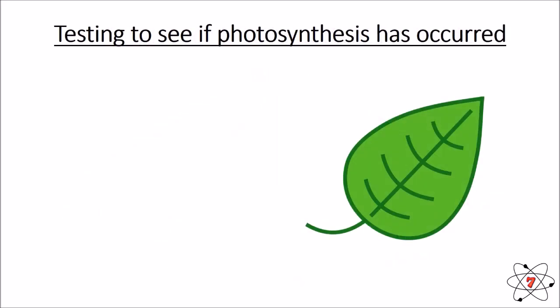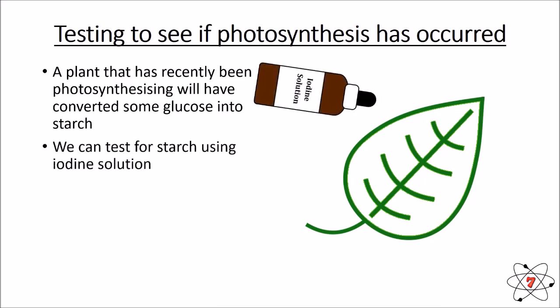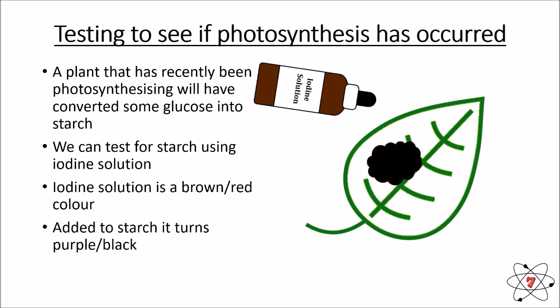It is possible to test a plant to see if photosynthesis has occurred. A plant that has recently been photosynthesizing will have converted some glucose into starch. To test for this, you first need to remove the chlorophyll by boiling the plant in ethanol, which leaves a white leaf. You then test the leaf using iodine solution — normally brown or red, it turns purple or black in the presence of starch. The more starch present, the darker the colour.